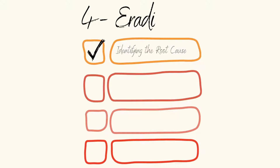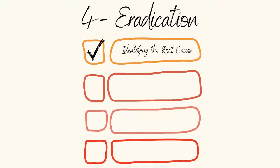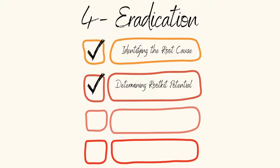4. Eradication. Identifying the root cause: With the information obtained in the second and third stages, the root cause of the event should be determined, and the attacker must then be completely removed. Determining rootkit potential: If rootkits are suspected in the system, the disk should be cleaned and a clean backup installed. After the installation, the latest updates of the existing applications and systems should be installed.